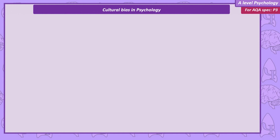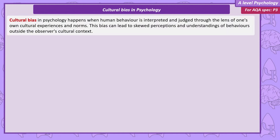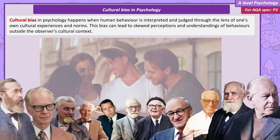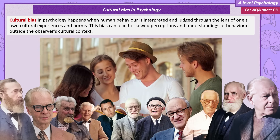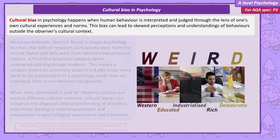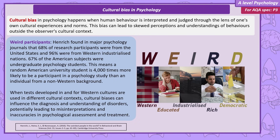Cultural bias in the context of psychology means interpreting and judging human behaviour through the lens of your own cultural expectations and norms. Much of current psychological theory has been conducted by and on people from a Western background. This term WEIRD comes from Henrich. In a sample of hundreds of studies from leading psychology journals, 68 percent of research subjects came just from the United States, and 96 percent from Western industrialised nations. When looking closer at the American subjects, 67 percent were undergraduates studying psychology. What this means is a randomly selected American university student is 4,000 times more likely to be a subject in a psychology study than a random non-Westerner.